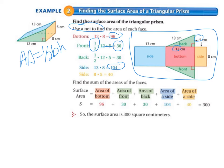So you find the sum of the area of the bases. And when you add all of those numbers up that we just discussed, you get 300. So the surface area is 300 square centimeters.